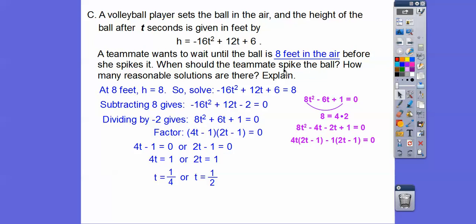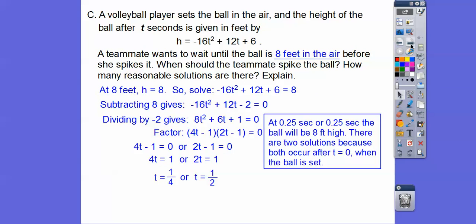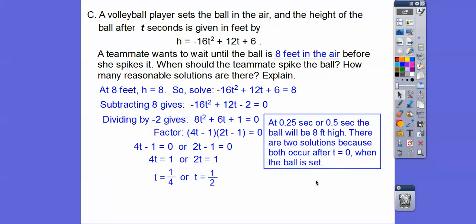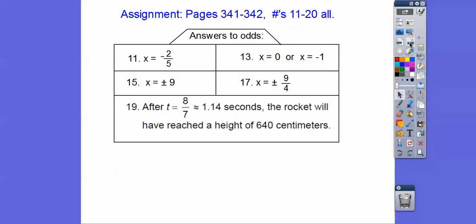When should the teammate spike the ball, and how many reasonable solutions are there? At t = 0.25 seconds or t = 0.5 seconds. There are two solutions because both occur after zero seconds — the ball goes up and comes back down, so it passes through 8 feet twice. Hope that makes sense. There's your assignment if you're in our class. Take care.